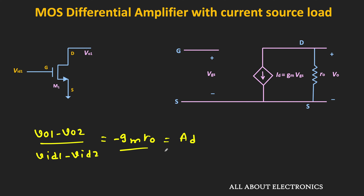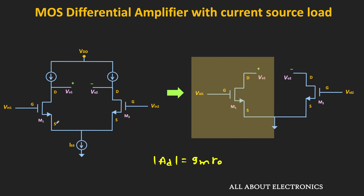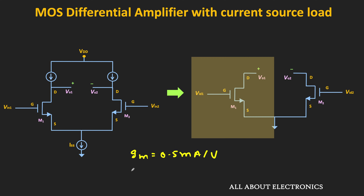This is the differential gain of the amplifier with the current source as a load. When the circuit is symmetric, just by considering the differential half circuit, we can easily find the gain. Now typically in integrated circuits, the output impedance of the MOSFET is in the tens of kΩ. For example, if the transconductance gm is equal to 0.5 mA/V and the output impedance is equal to 50 kΩ, the differential gain of this amplifier will be equal to 25.